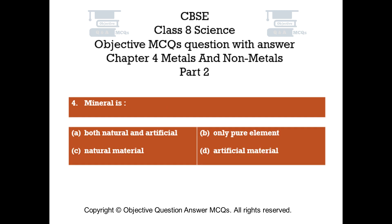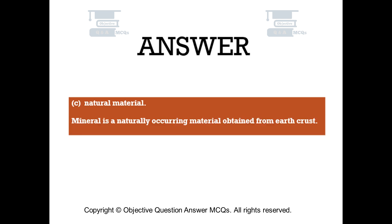Question number 4: Mineral is — Option A: Both natural and artificial. Option B: Only pure element. Option C: Natural material. Option D: Artificial material. The right answer is Option C — Natural material. Mineral is a naturally occurring material obtained from the earth's crust.